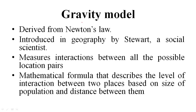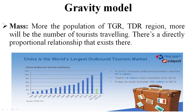The tourism gravity model is derived from Newton's law and was introduced into geography by Stewart, a social scientist who applied it to tourism geography studies. This model measures interaction between all possible location pairs using a mathematical formula that describes the level of interaction between two places based on population size and distance between them.